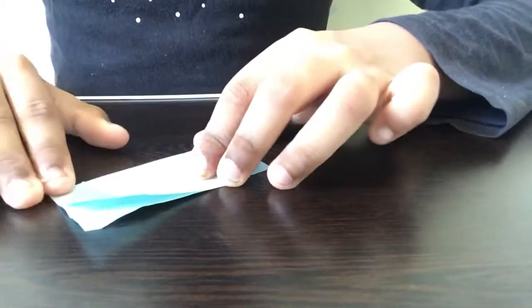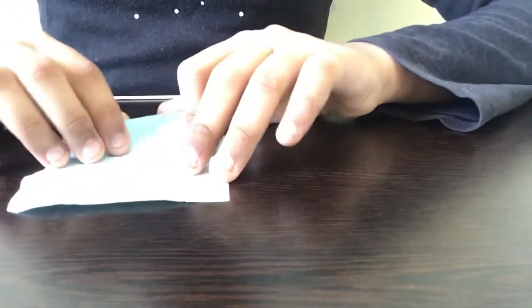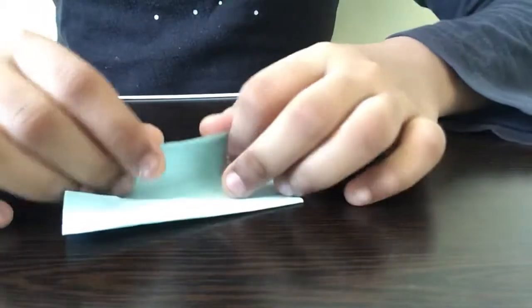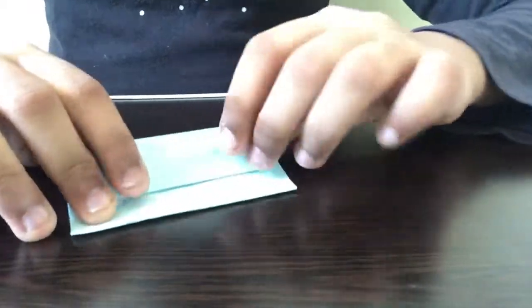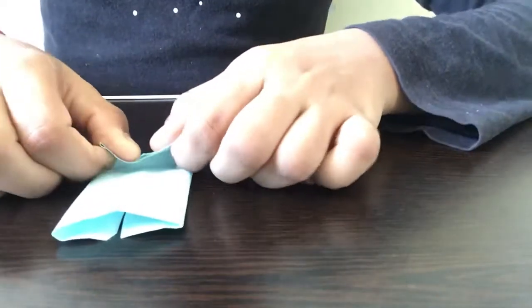The first step is to fold the paper in half like this. Now we have to fold both sides of the paper to the middle line.